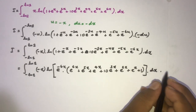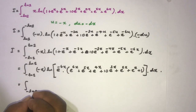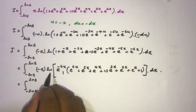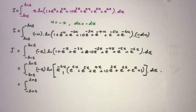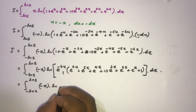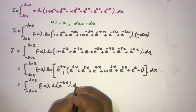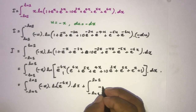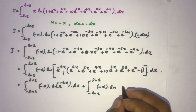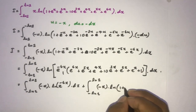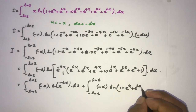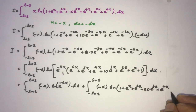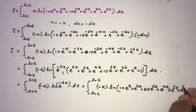Using the property of the natural log, we split this into two integrals: first, minus x times the natural log of e^(-6x) dx, plus the integral from minus natural log of 2 to natural log of 2 of minus x times the natural log of (1 + e^x + e^(2x) + 10·e^(3x) + e^(4x) + e^(5x) + e^(6x)) dx.